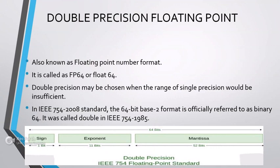Hi guys. Now I am going to explain double precision floating point format, sometimes called x3.64 or float64. It is a floating point number format usually occupying 64 bits in computer memory. It represents a wide dynamic range of numeric values by using a floating radix point. Double precision may be chosen when the range or precision of single precision would be insufficient.